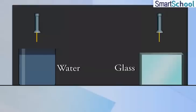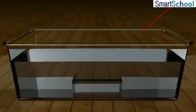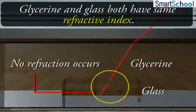When light is incident normally on a boundary of two media, no change in direction of light occurs. No refraction occurs at the boundary that separates two media of equal refractive index.